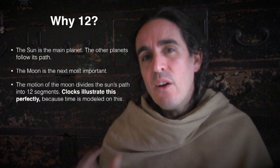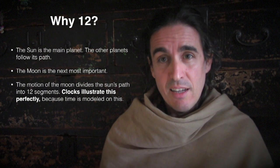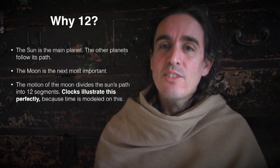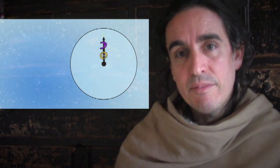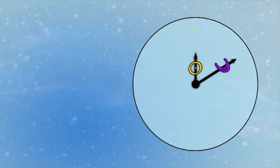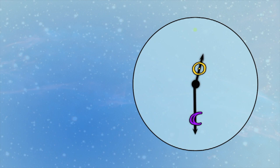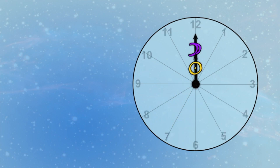The best way to illustrate how the motion of the moon and sun divide space into 12 segments is to use an analog clock. Clocks illustrate the divisions of the zodiac perfectly because their design is based on the zodiac. The slow hand is the sun and the fast hand — the long hand — is the moon. Put them both in the same spot, let the clock run, and put a mark where the sun is every time the moon completes one lap around the whole clock. You'll get these 12 divisions — that's how the zodiac gets divided.